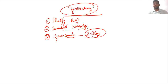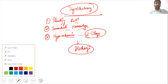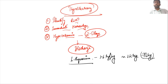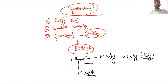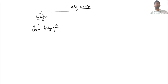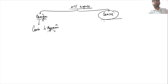Once post-operative complications are ruled out, the patient is discharged on levothyroxine tablets — especially after total thyroidectomy — at a dose of 1.6 micrograms per kg, which is approximately 112 micrograms for a 70 kg individual. The patient is asked to follow up with the histopathology report after 7 to 10 days. If the HPE report is benign, continue levothyroxine and follow up with TSH. If it shows cancer, risk stratification is performed.